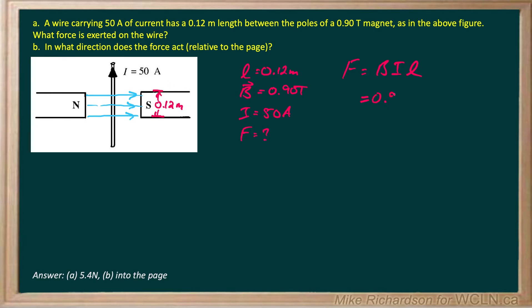Magnetic field is 0.90 teslas. Current is 50 amps. And the length immersed in that external magnetic field is 0.12 meters. Now the only criteria is that magnetic field and current have to be 90 degrees to each other, and they are. So it's all good.